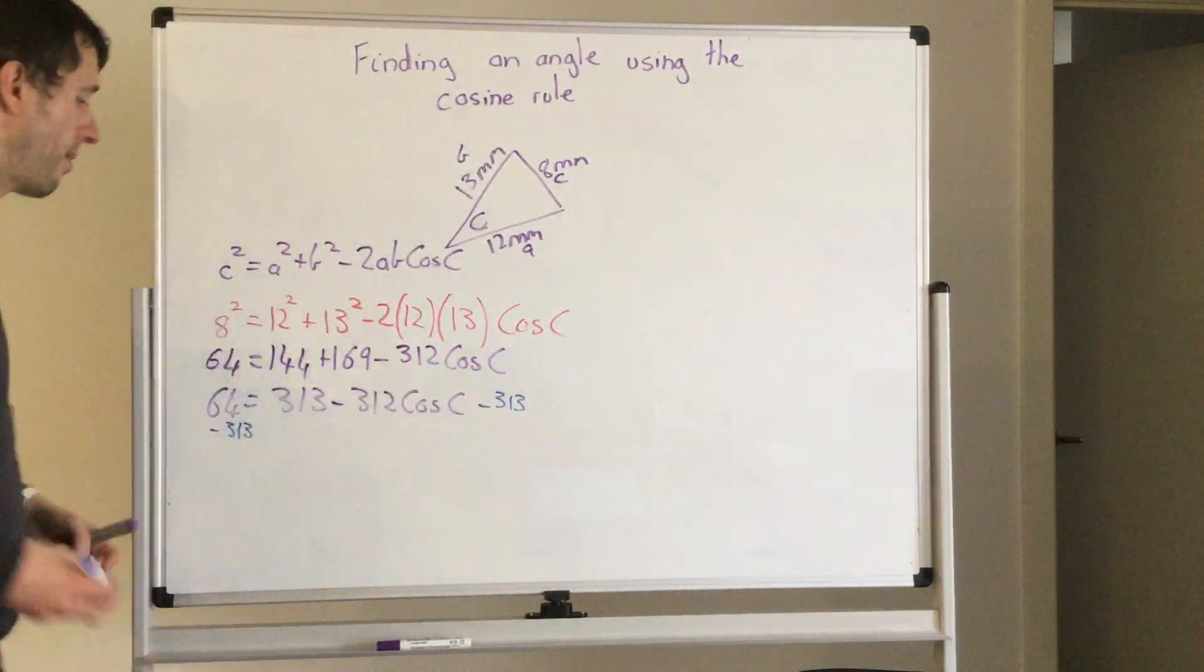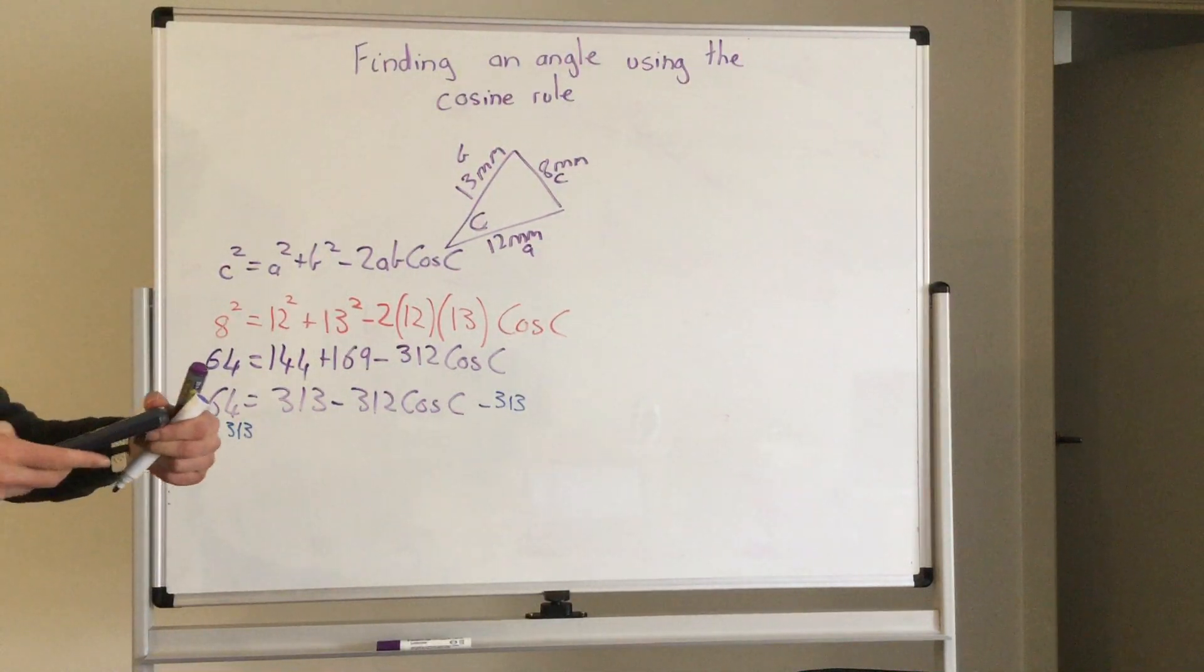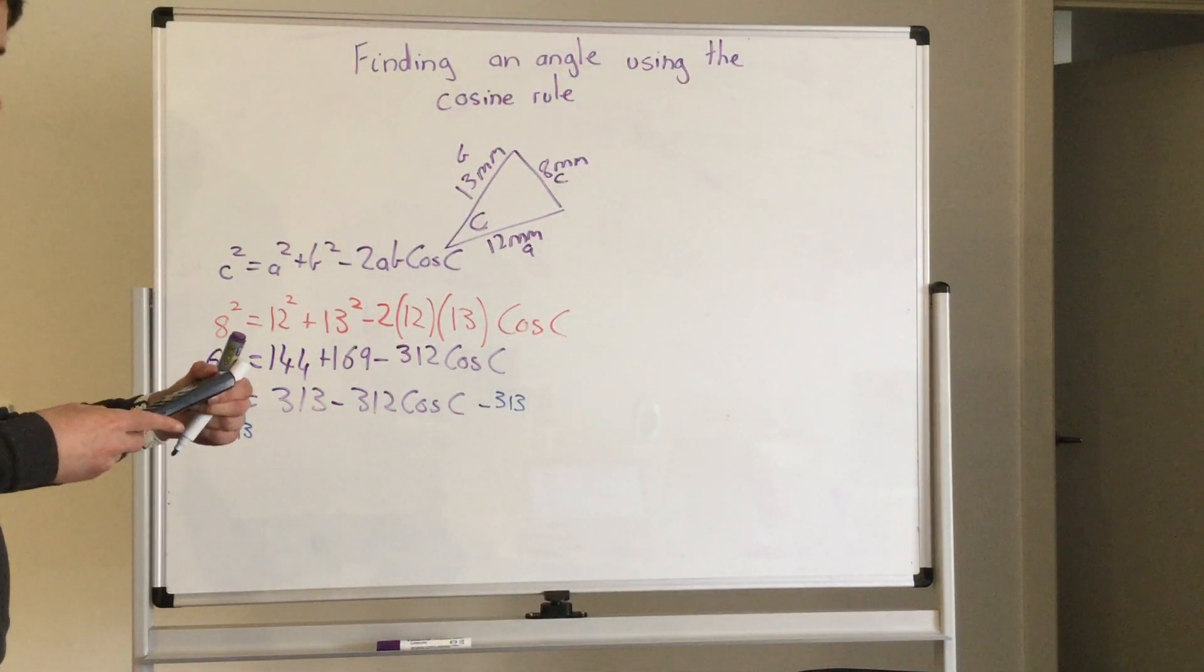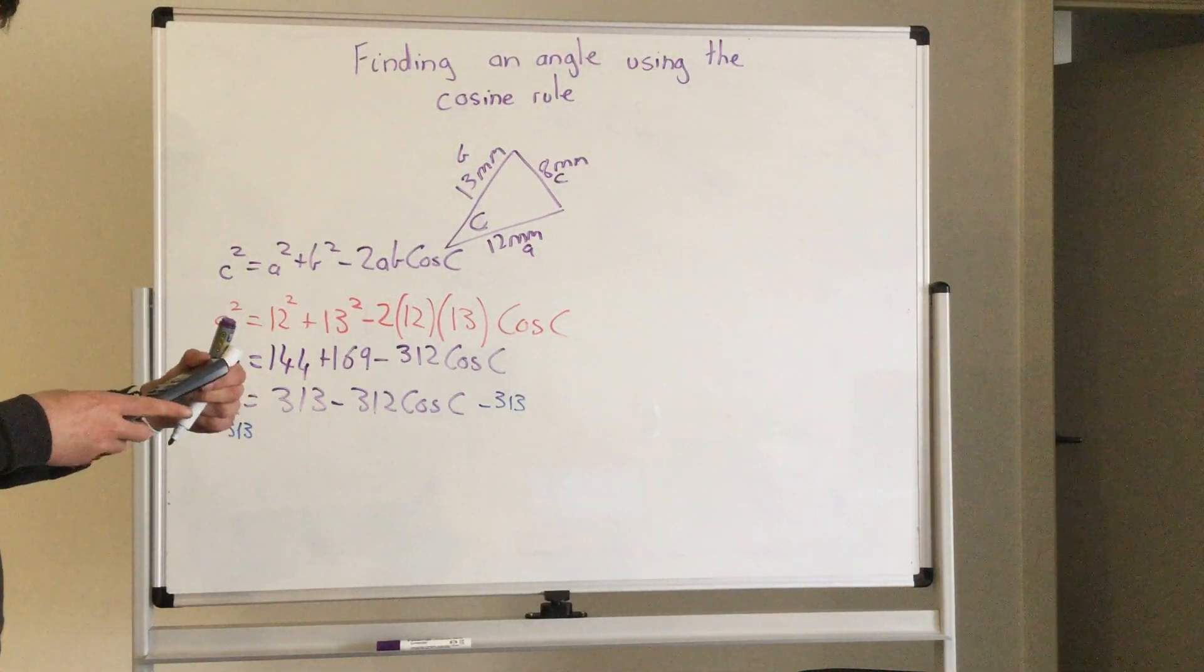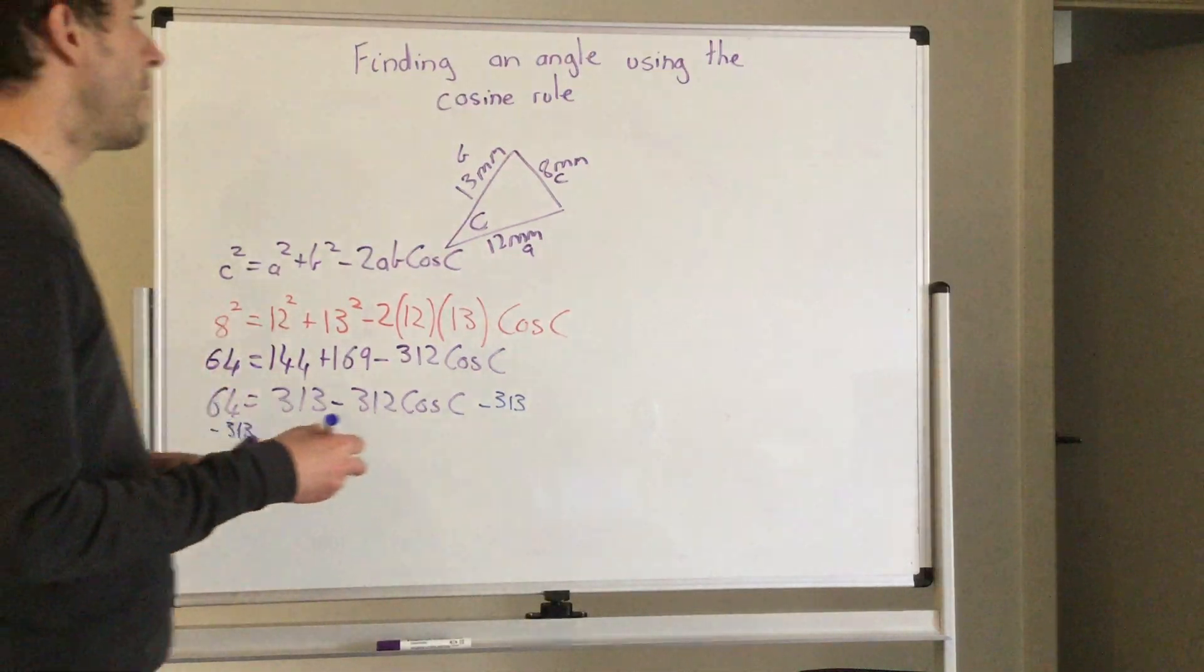That cancels out, and that means I'm left with 64 take 313. So 64 take 313 is minus 249.